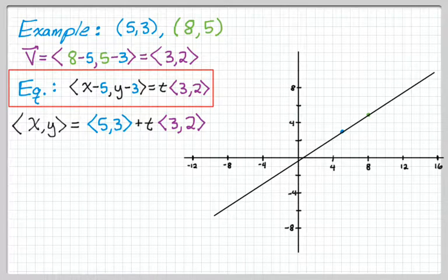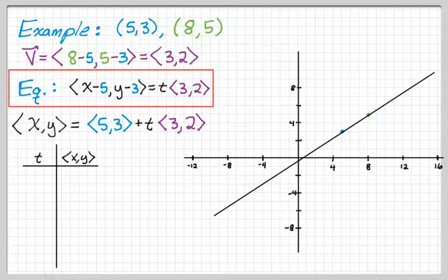So I set up a grid and I kind of graphed it. And then if we set up a table and do exactly what I was saying. So if t is equal to 0, you plug in 0 in that rewritten equation. And you get 5, 3 plus 0 times 3, 2, which just gives you 5, 3.